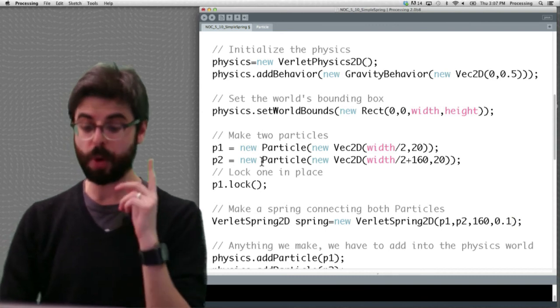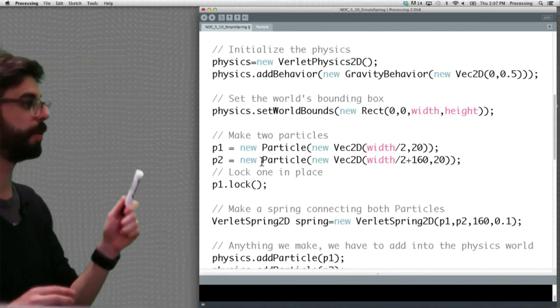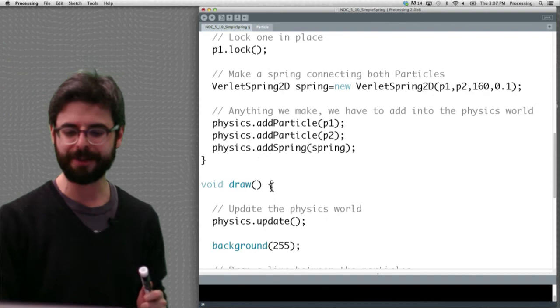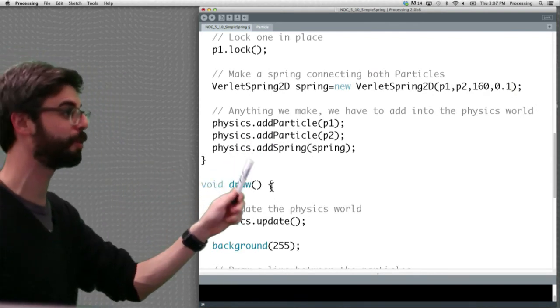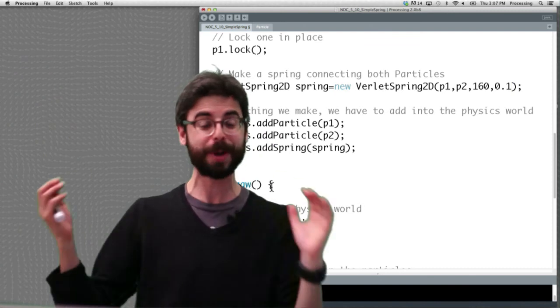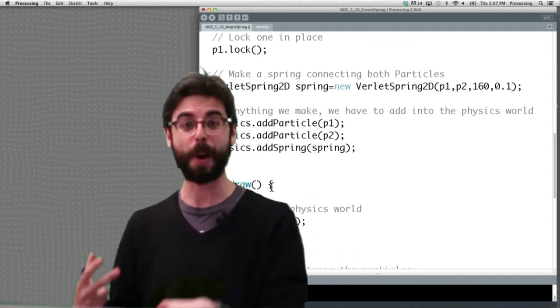One thing that I should, there's two other things I should point out about this particular example. Number one is whenever you make these things, you need to make sure you add them to the physics world. So you can make particle objects or you make spring objects. If you don't tell Toxic Libs they're part of the physics world, they won't respond to the physics.